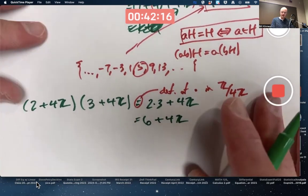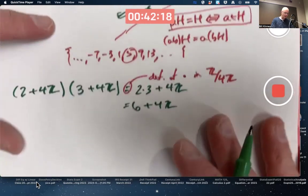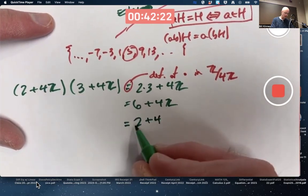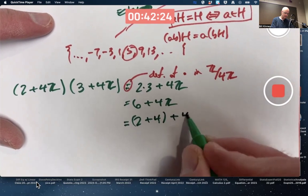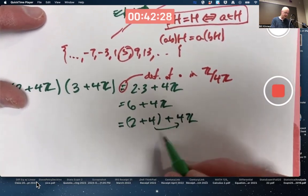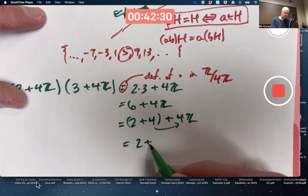And then you simplify this in the same kind of way you simplify that. Write 6 as 2 plus 4. And then the 4 ultimately gets sucked into the 4Z. This is the same as 2 plus 4Z.